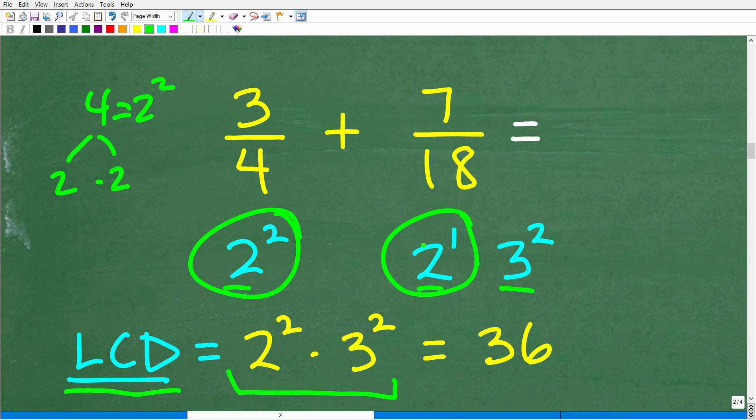So in other words, we have a 2, we have another 2 over here, we have a 3. So we're going to need 2 and 3 in our LCD. We're going to multiply them together. But some of you might be saying, well, do we multiply 2 squared, 2 to the first, and 3 squared? No, no, no. Because we have 2 powers of 2s here, right? So 2 squared and 2 to the first. Which one do we use? Do we use both? Well, no, okay? You only use the highest power. So this is the highest power, 2 squared.